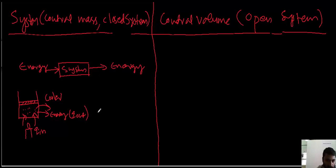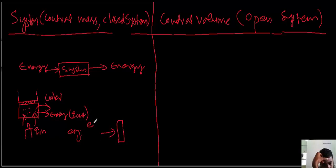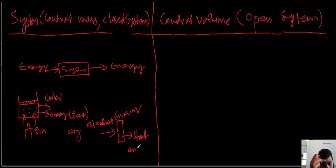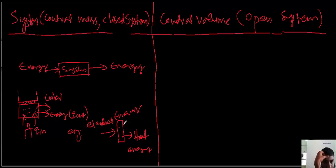Consider an iron box. We give in electrical energy — that is the energy going into the iron box — and it gives out heat energy. Only energy interaction takes place between the iron box and the surroundings. So this is an example of a system; we call this type of system a closed system.